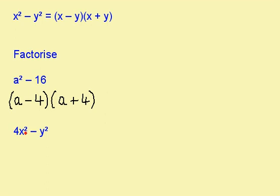This number here is the square of 2x because 4 is the square of 2 and x squared is the square of x. This here is the square of y, so we've got 2x minus y and 2x plus y.